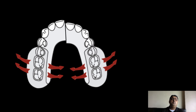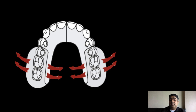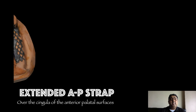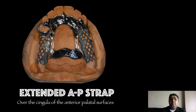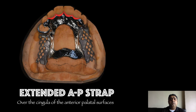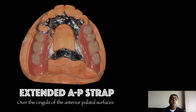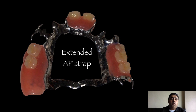What the open horseshoe does is subject the framework to rotational forces in the horizontal plane — that is, flexion and deformation in this major connector are easily seen. What about the extended AP strap? That is how the AP strap is modified in lieu of the open horseshoe design. If you see, the anterior strap — just like an open horseshoe — traverses along the cingula of the anterior teeth, but in this case we also have a posterior strap which imparts rigidity into the design. This is the final visual of the cast partial denture.